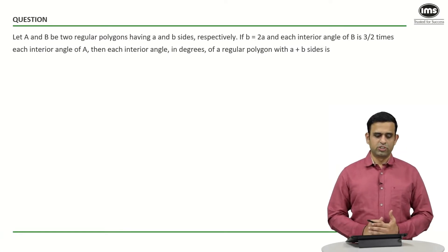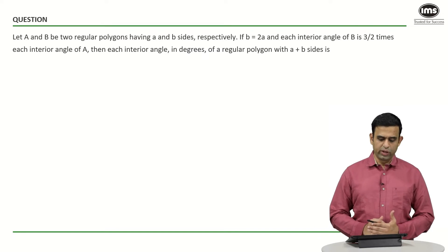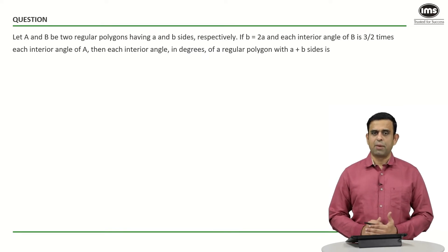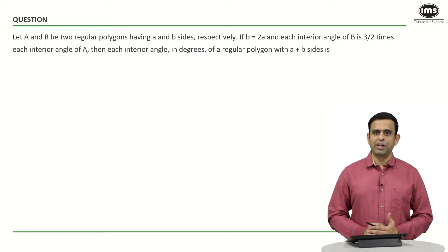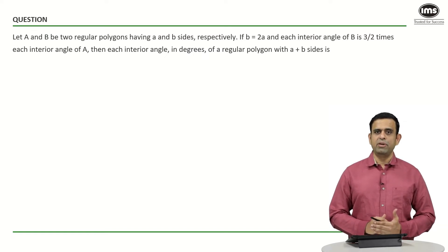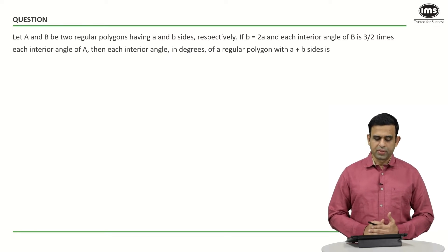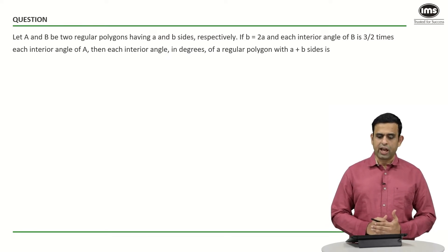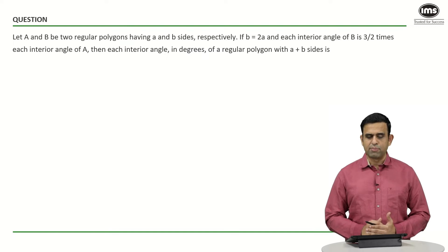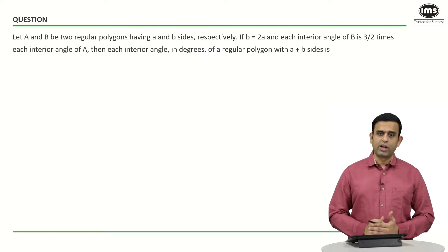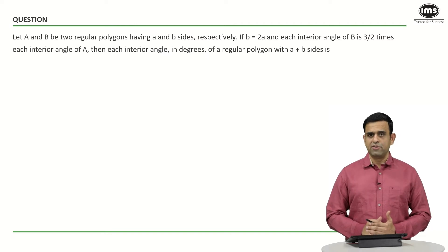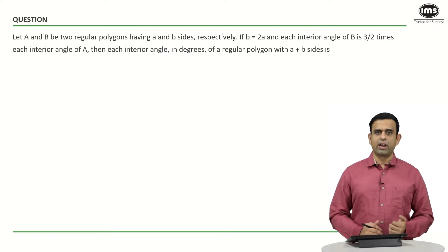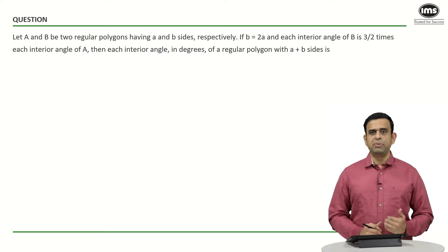In this particular sum, we have two regular polygons, capital A and capital B, with respective sides as small a and small b. They have given that small b is equal to twice of small a, and each interior angle of capital B is 3/2 times that of each interior angle of capital A. The objective is to find the interior angle in degrees of a regular polygon with A plus B sides.